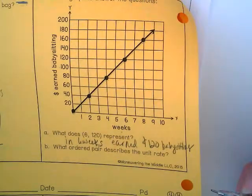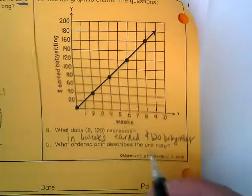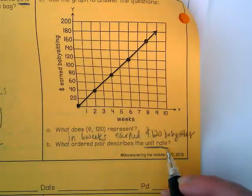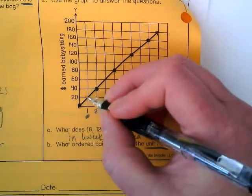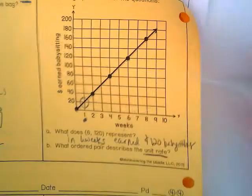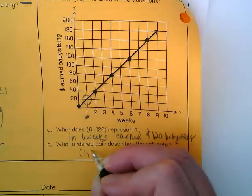What ordered pair describes the unit rate? What's the unit rate always over? 1. Where does this fall for 1? So what's my ordered pair? 1, 20.